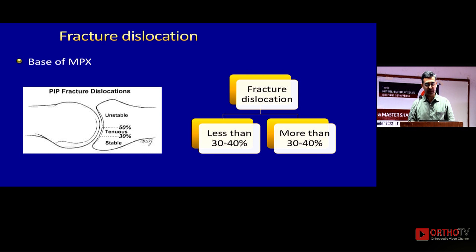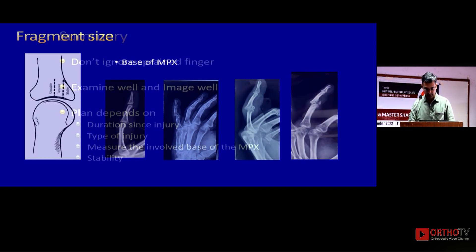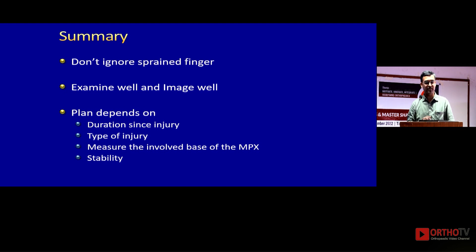If the joint is stable in flexion, extension, and medial-lateral testing, you may not need to do much except protect it. If it's unstable, you may need intervention. The commonest injury in a PIP joint is a fracture dislocation. Whether it's 10, 20, or 30 percent fragment size, what really matters is whether the joint is stable after reduction. However, if the volar fragment is more than 50 percent of the articular surface, you need to do something more major.